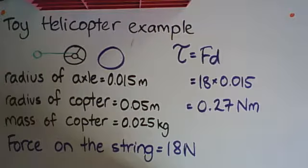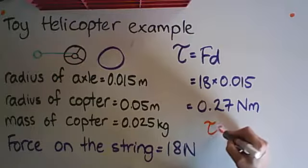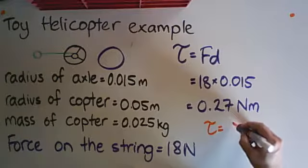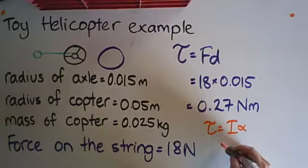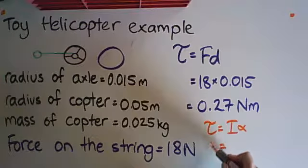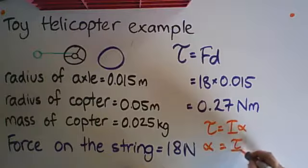We know that torque also equals rotational inertia times by angular acceleration, τ = Iα. We can rearrange that to get angular acceleration equals torque divided by rotational inertia, α = τ/I.